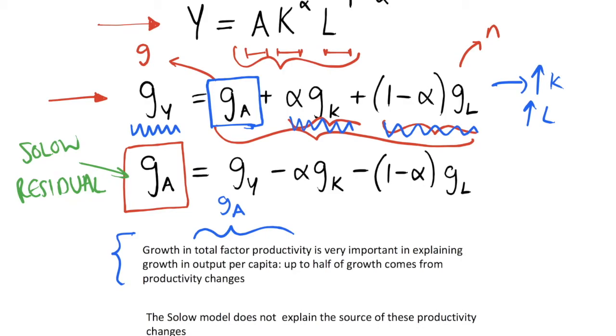The way we know this is because we can calculate the growth in the capital stock and the growth in our labor force year on year, and we can also calculate the growth in our output. So anything that isn't covered by this is covered by the Solow residual. This is why it's called a residual, because it's just everything that's left over that we can't explain.